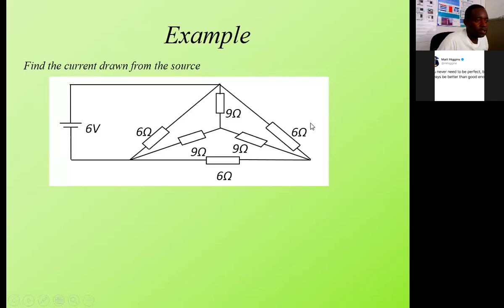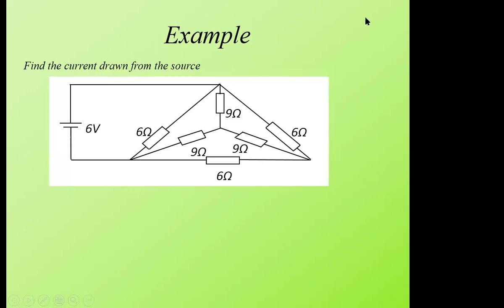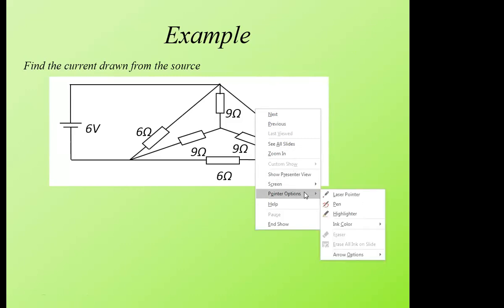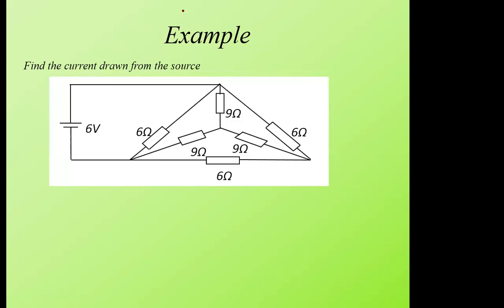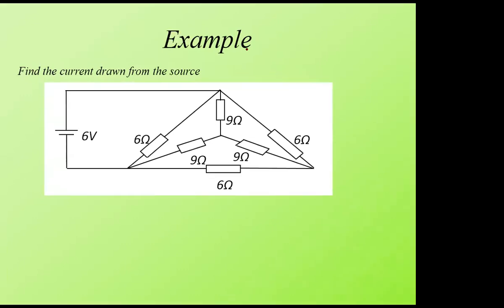Let's proceed from where we left off. We want to calculate the total current drawn from the source, and we know that we can only calculate the current from the source if we know the total resistance in the circuit. So in this example, we want to pick a section to convert — either from star to delta or from delta to star.